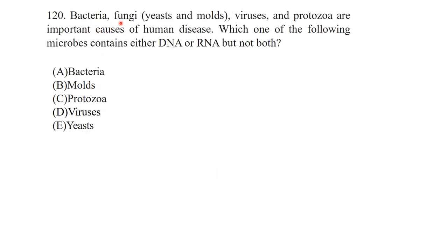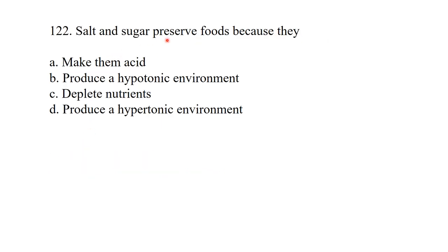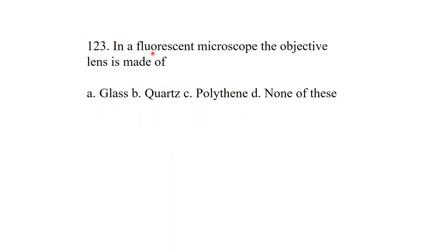Bacteria, fungi, viruses, and protozoa are important causes of human diseases. Which one of the following microbes contains either DNA or RNA but not both? It is viruses — viruses may have DNA or RNA, never both. The vector used in the human genome project is a yeast artificial chromosome. Salt and sugar preserve foods because they produce a hypertonic environment. In a fluorescence microscope, the objective lens is made up of polythene.